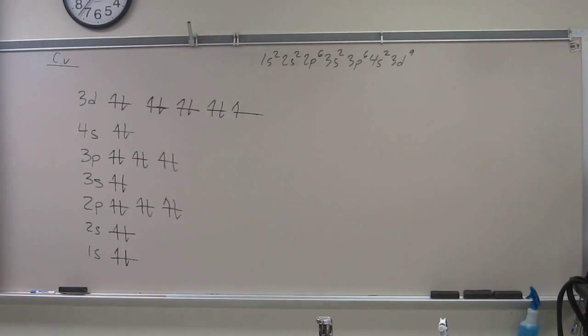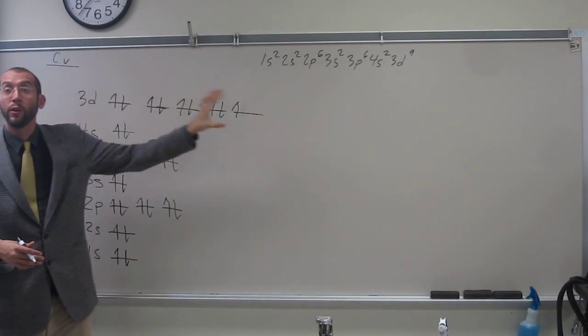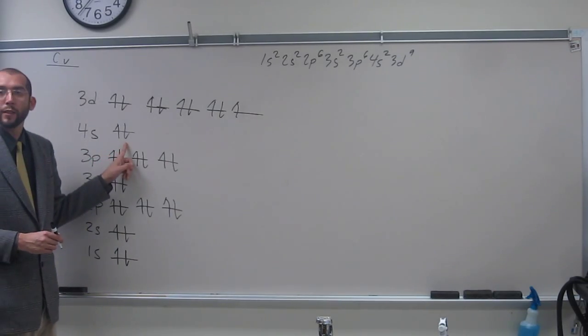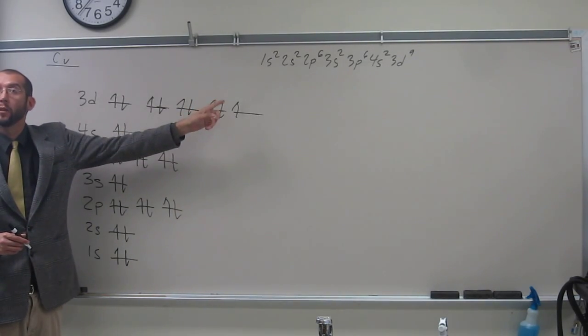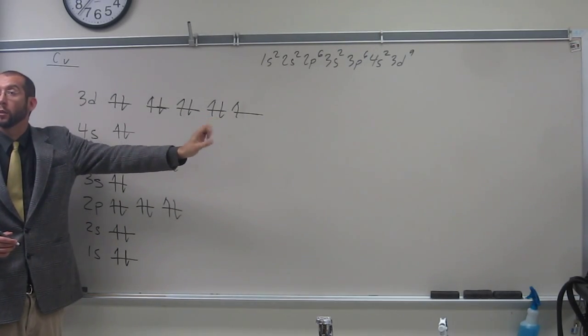But copper is one of these anomalous filling elements, right? So what does it like to do? Well, because it's one away from having a full D shell. And remember, when you have a full D shell, you become very, very stable. So what it does is it takes that 4s electron and moves it up into its 3d subshells.